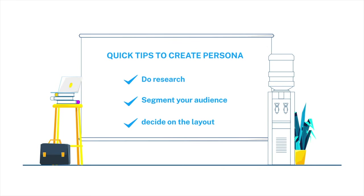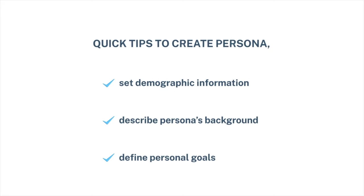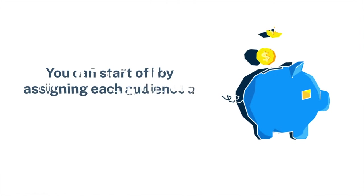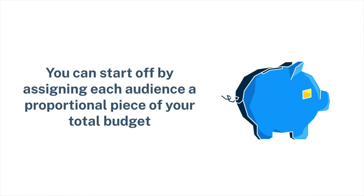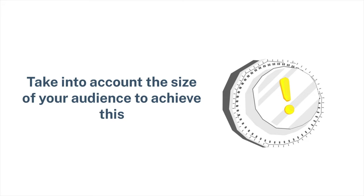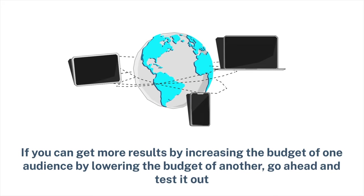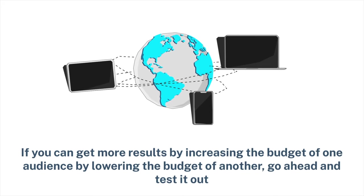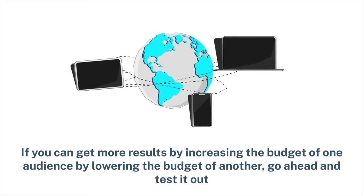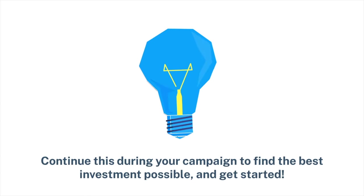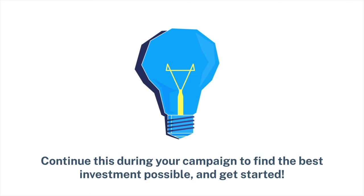Quick tips to create a persona: do research, segment your audience, decide on the layout, set demographic information, describe the persona's background, and define personal goals. Start by assigning each audience a proportional piece of your total budget, taking into account the size of your audience. When your campaign is running, you will notice that some audiences are outperforming others. If you can get more results by increasing the budget of one audience while lowering another, go ahead and test it out. Continue this during your campaign to find the best investment possible.